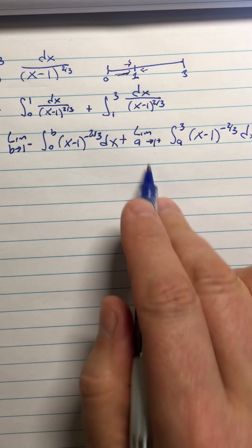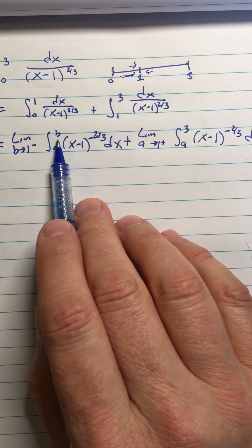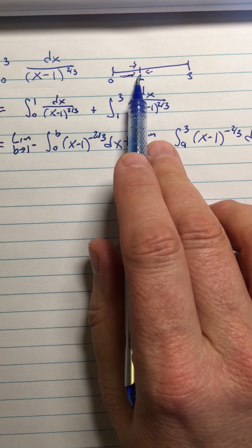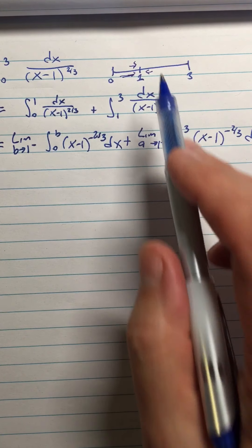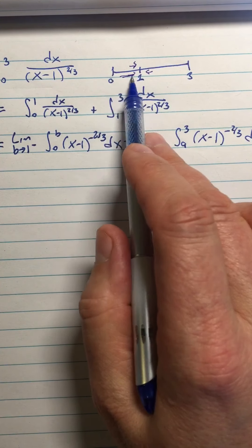So that's how we're splitting this up, basically, as two limits. One is the limit as b approaches 1 from the left. The other as a approaches 1 from the right. So this integral is this part. This integral is this part.